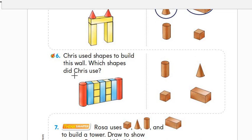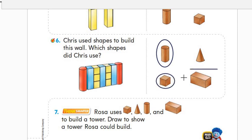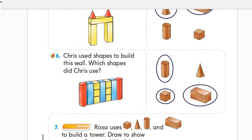Number six: someone used shapes to build this wall. Which shapes were used? This is the wall. We can see a cylinder, a rectangular prism, cubes, and again rectangular prism, cubes, rectangular prism, and cylinder. So it uses cylinder, cube, and rectangular prism. Count: one, two, three, four, five, six cubes; one, two, three rectangular prisms; and one, two cylinders. That is all for today — thank you for watching, do your homework and have fun!